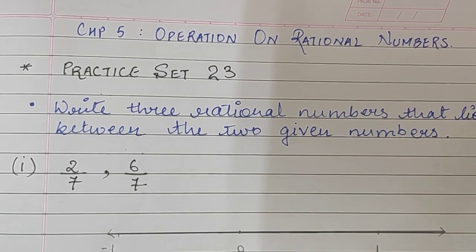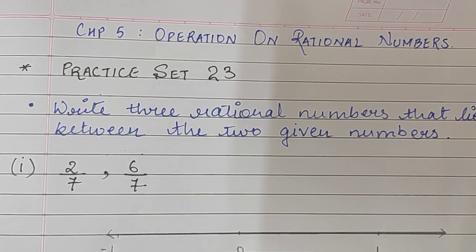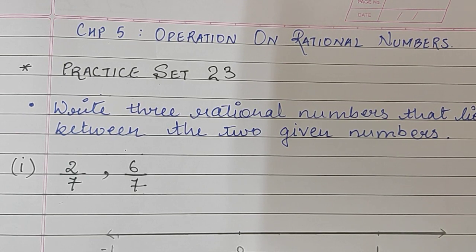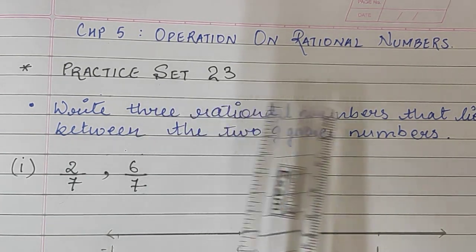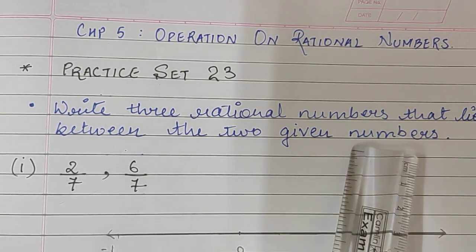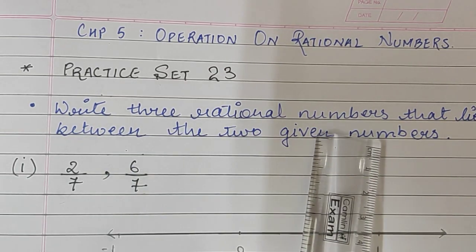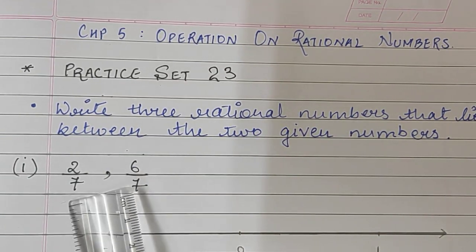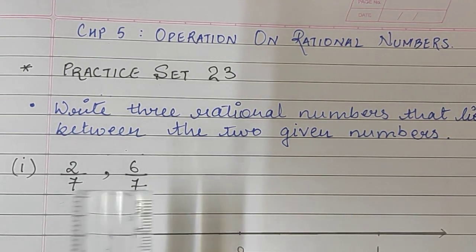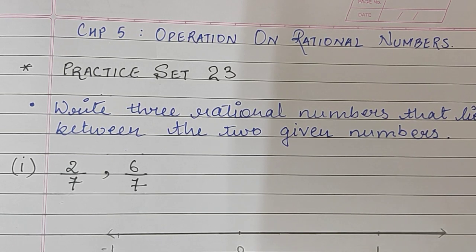Hello my dear children. Today we will continue with Chapter 5, Operations on Rational Numbers, Practice Set 23. In this practice set, we have to find 3 rational numbers that lie between the 2 given numbers. Suppose there is a question like: find 3 rational numbers between 1 to 10 — it will be very easy for you to spot any 3 numbers between 1 to 10.